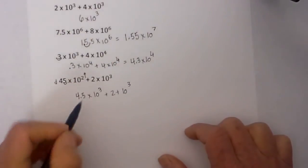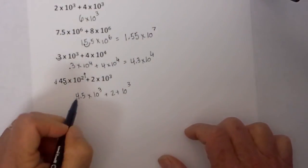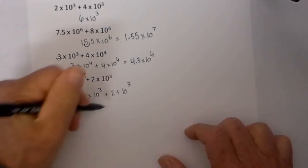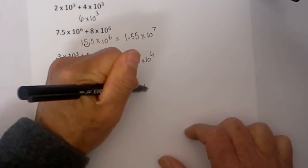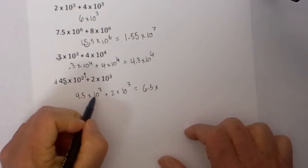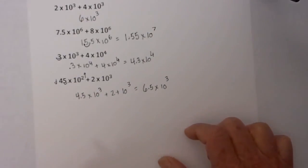Next what I do is add the two coefficients 4.5 plus 2 equals 6.5 times 10 to the third and there we go.